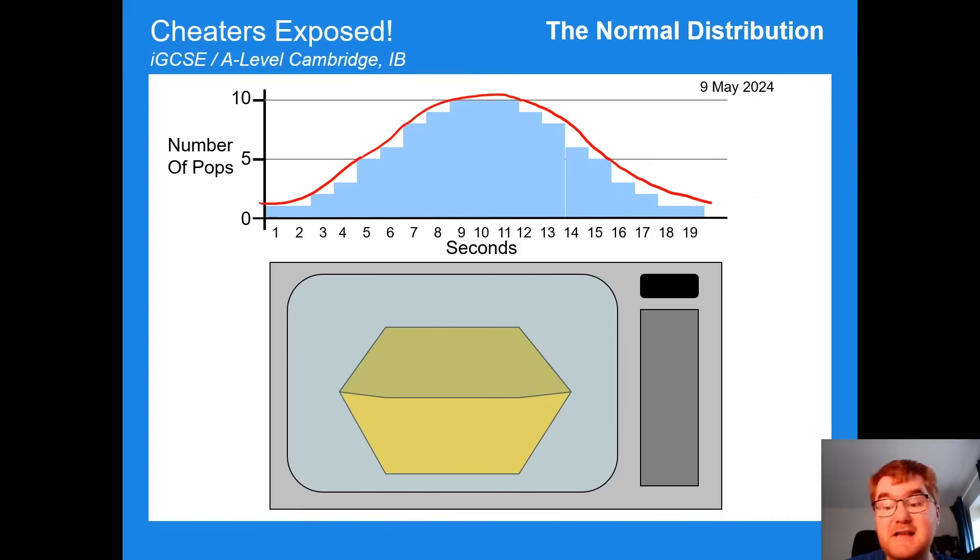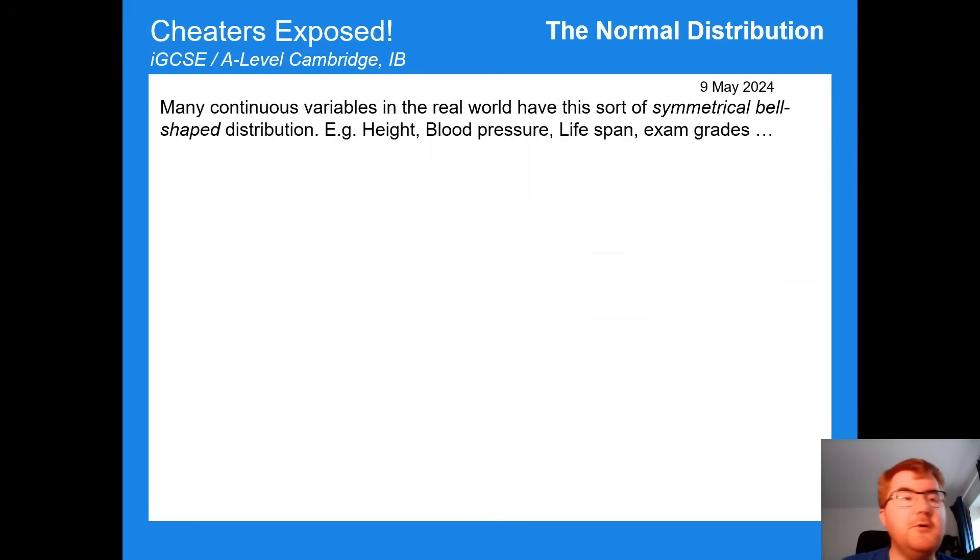Now it's not just in popcorn that this actually works. Many what we call continuous variables have this kind of symmetrical bell shape distribution. So we have height, we have blood pressure, lifespan, and also, most importantly for this video, exam grades also follow this bell curve distribution.